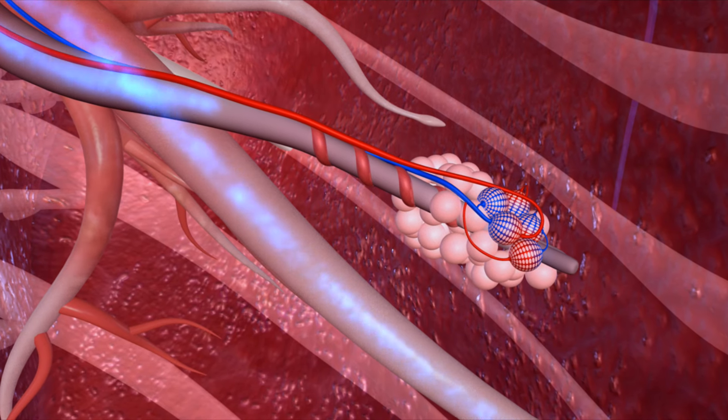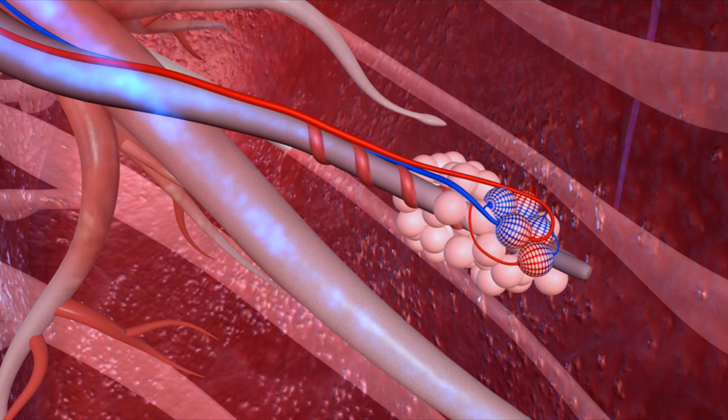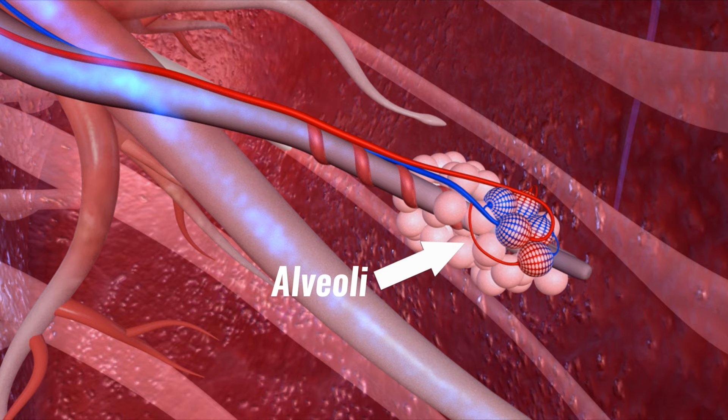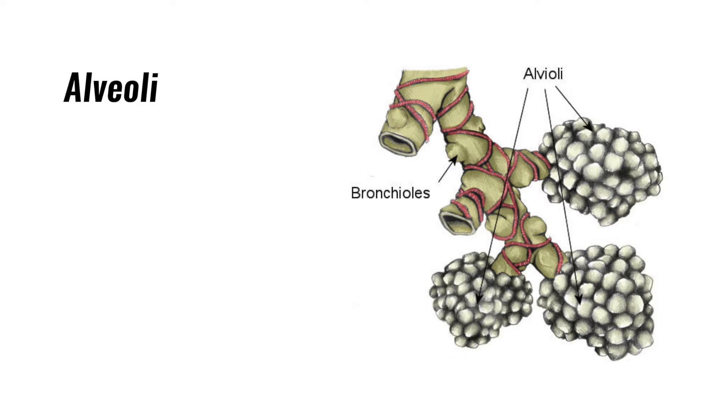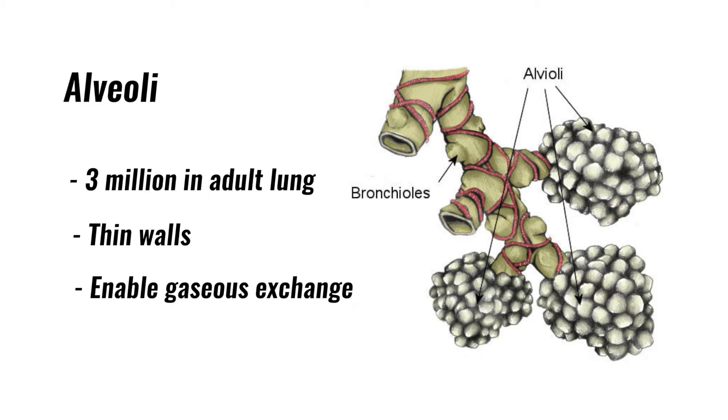This is where gaseous exchange takes place. Alveoli are individual hollow cavities contained within alveolar sacs or ducts. There are approximately 3 million alveoli within an average adult lung. They have very thin walls which permit the exchange of oxygen and carbon dioxide gases.